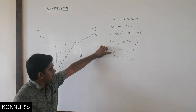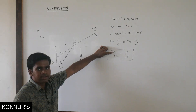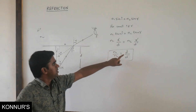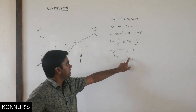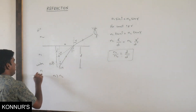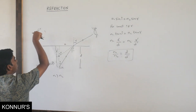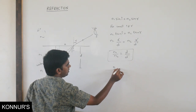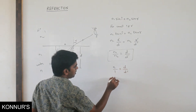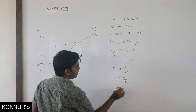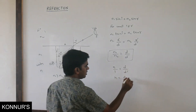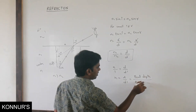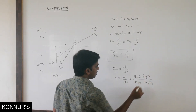When an object is in a denser medium (like water with refractive index N, air above with index 1): N1 is N, N2 is 1, so N/1 = D/D′, giving N = real depth / apparent depth. The shift equals real depth minus apparent depth: D − D/N = D(1 − 1/N).